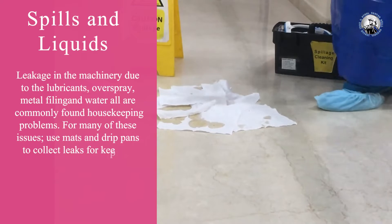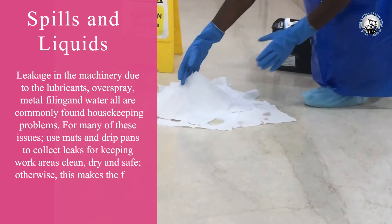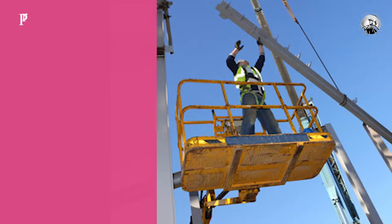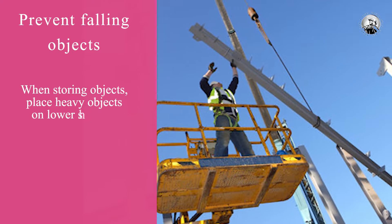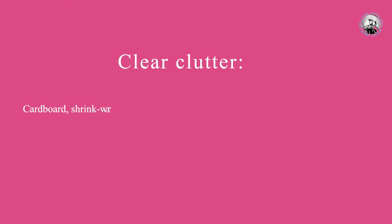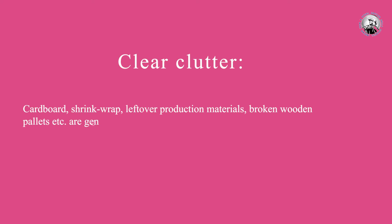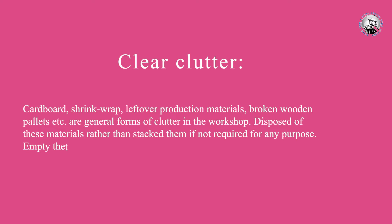Spills and liquid leakage in the machinery due to lubricants, overspray, metal filings, and water are commonly found housekeeping problems. For many of these issues, use mats and drip pans to collect leaks and keep the work area clean, dry, and safe, otherwise the floor becomes wet and slippery. Prevent falling objects — when storing objects, place heavy objects on lower shelves and don't place equipment near the edge of the shelves.